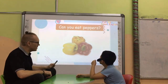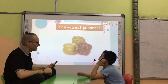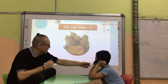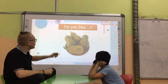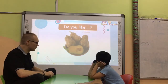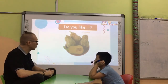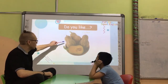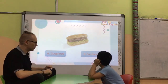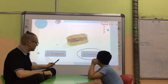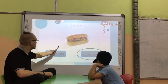Can you eat peppers? Yes, I can. Do you like pumpkins? No, I don't. A or B? B. What is B? Seven. Great.